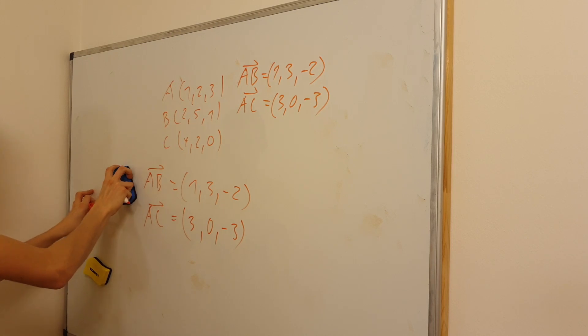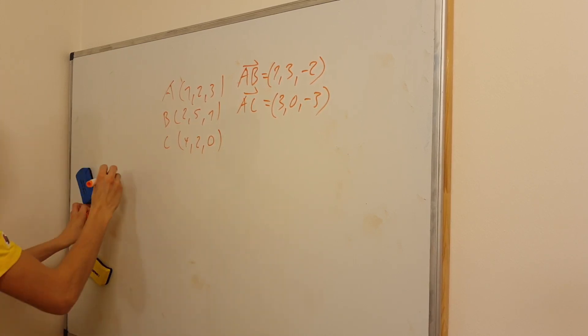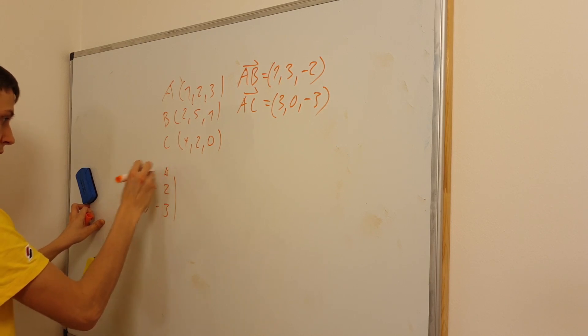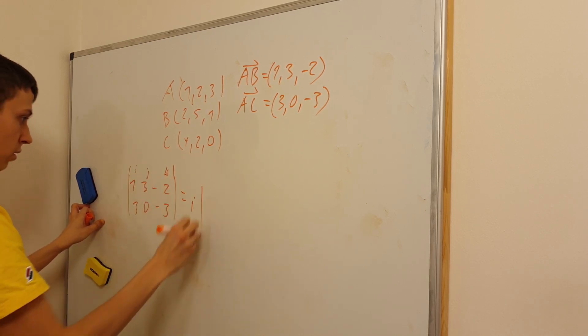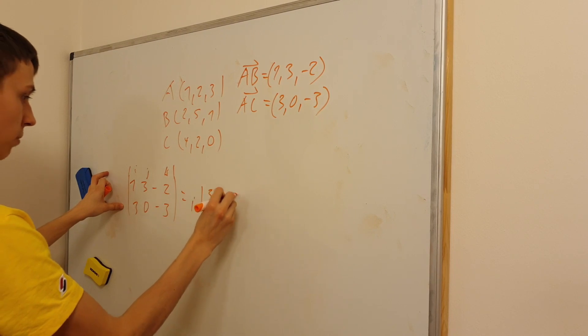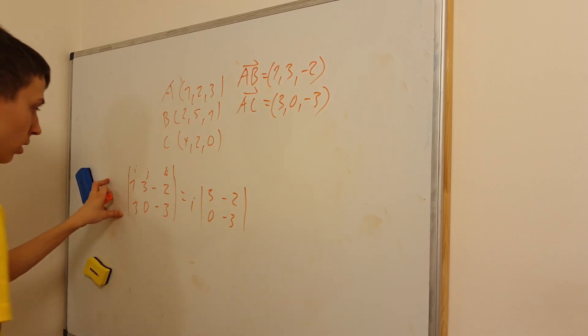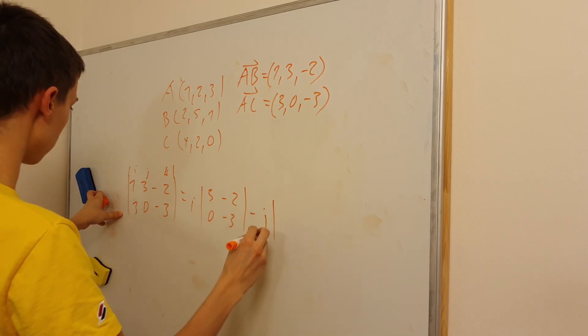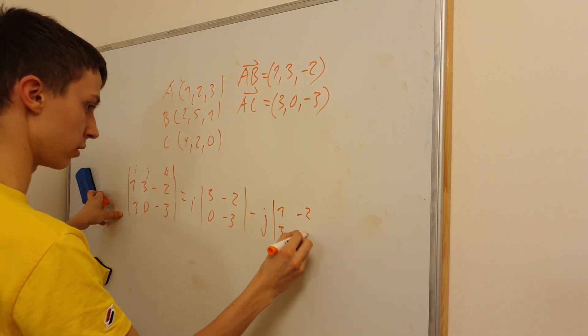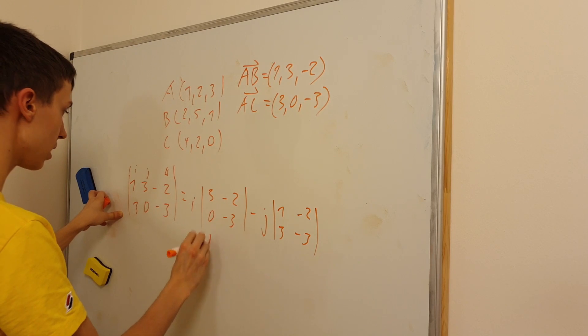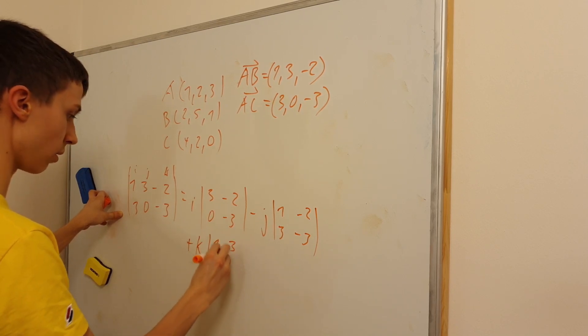Here, 1, 3, minus 2, 3, 0, minus 3. By the way, the video on cross product is another video of mine that you can watch. So, I times 1, 3, minus 2, minus 3, plus K times 1, 3, 3, 0.